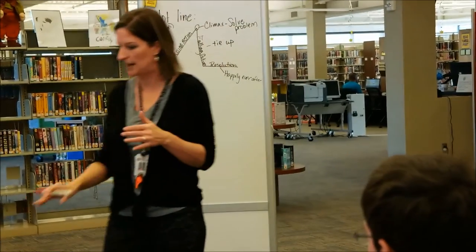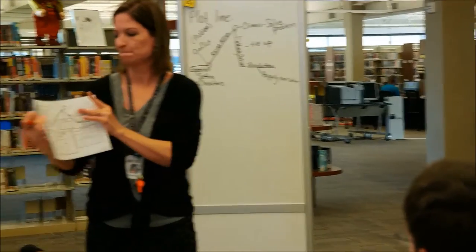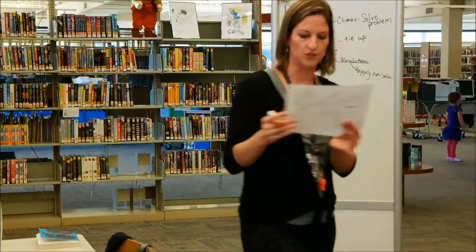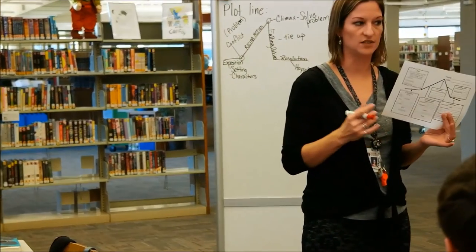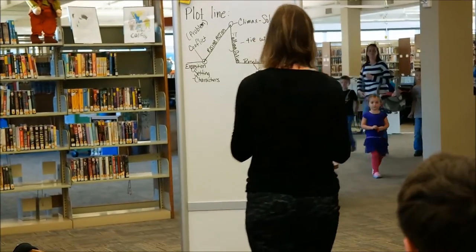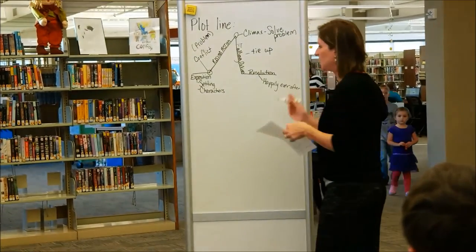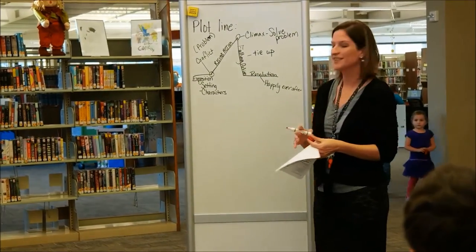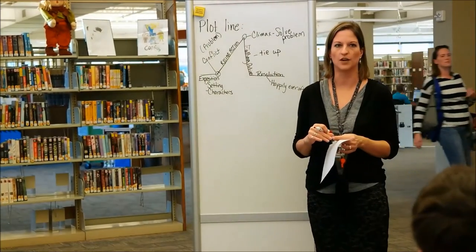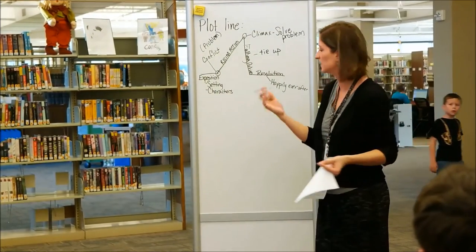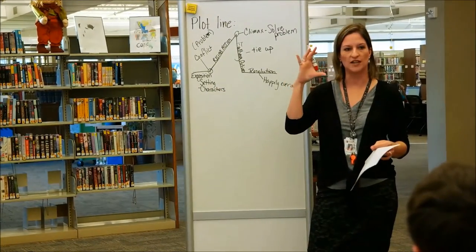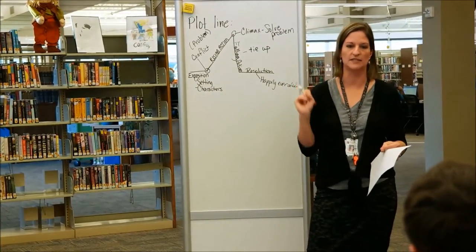Going back to your plot line, you have some elements that you need to establish right away in your exposition. You have a six-minute video and it's visual. So think about the different things you're going to do to make your setting immediately knowable. What kind of things are you going to do in your first shot to make your setting — bam — immediately clear?